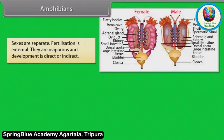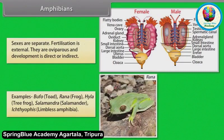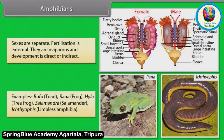Sexes are separate. Fertilization is external. They are oviparous and development is direct or indirect. Examples: Bufo (Toad), Rana (Frog), Hyla (Tree Frog), Salamandra (Salamander), Ichthyophis (Limbless Amphibia).